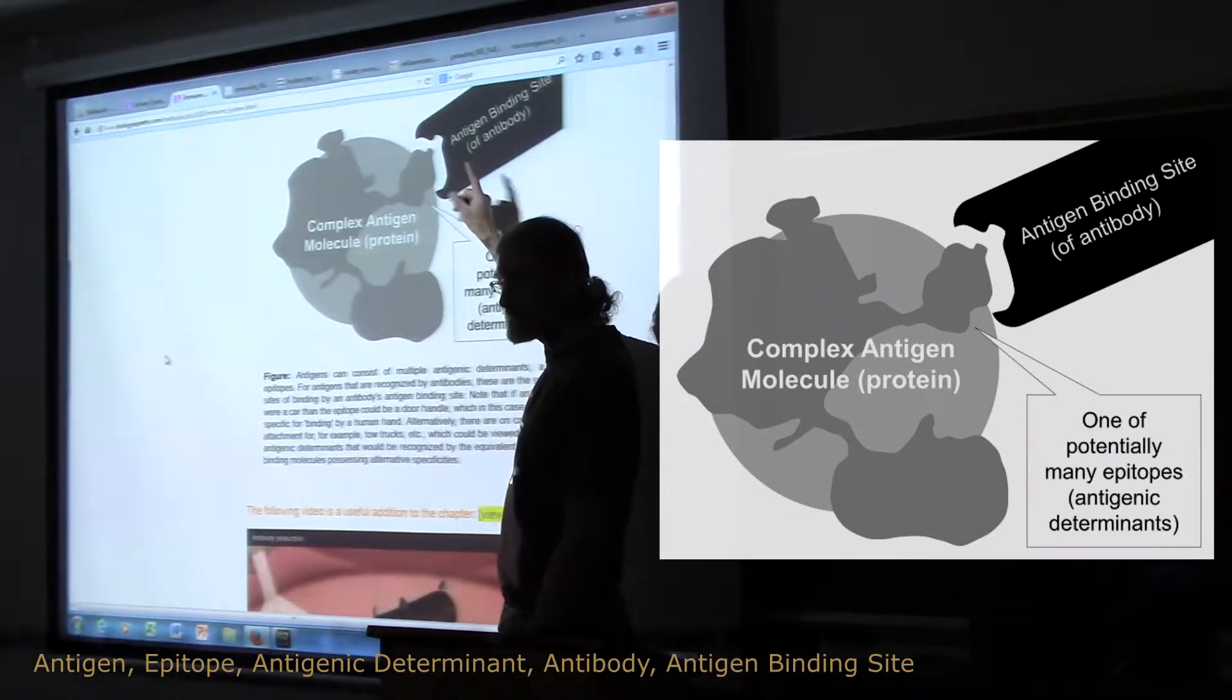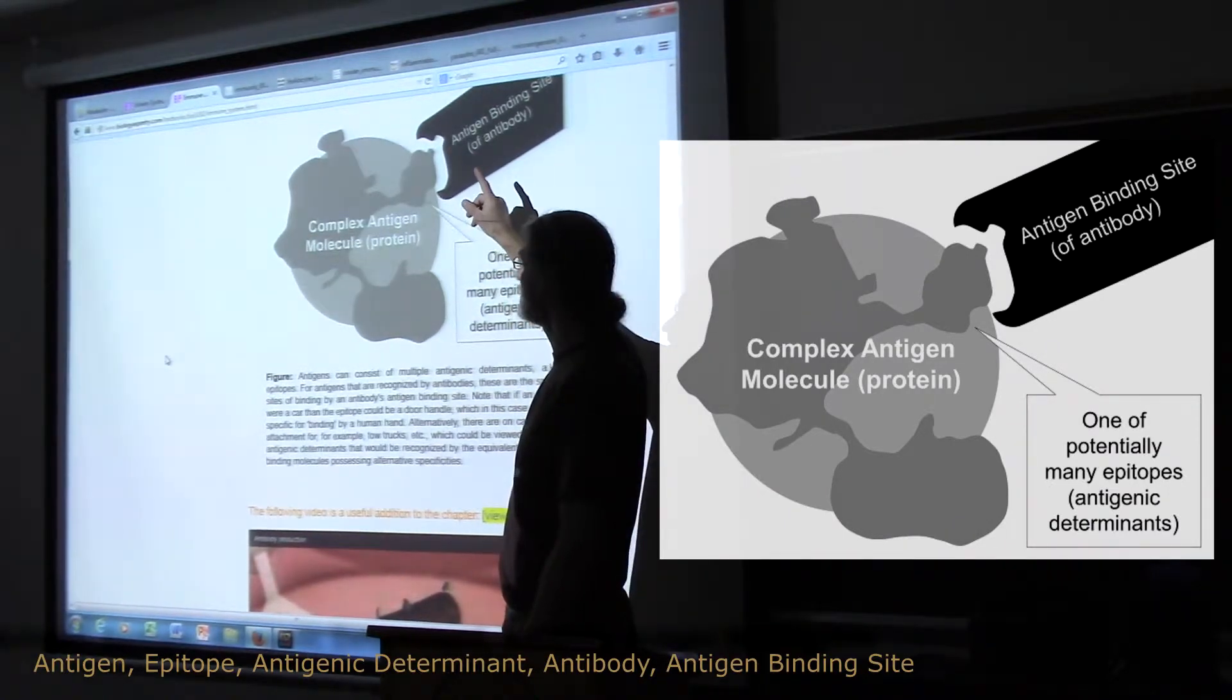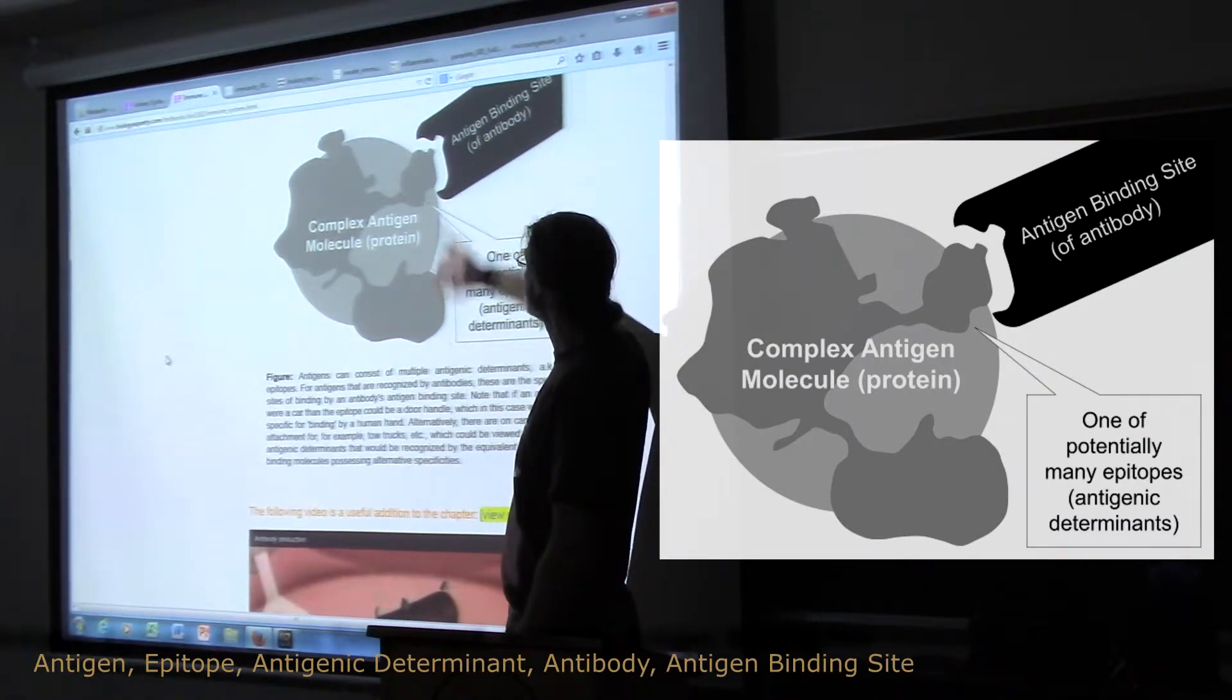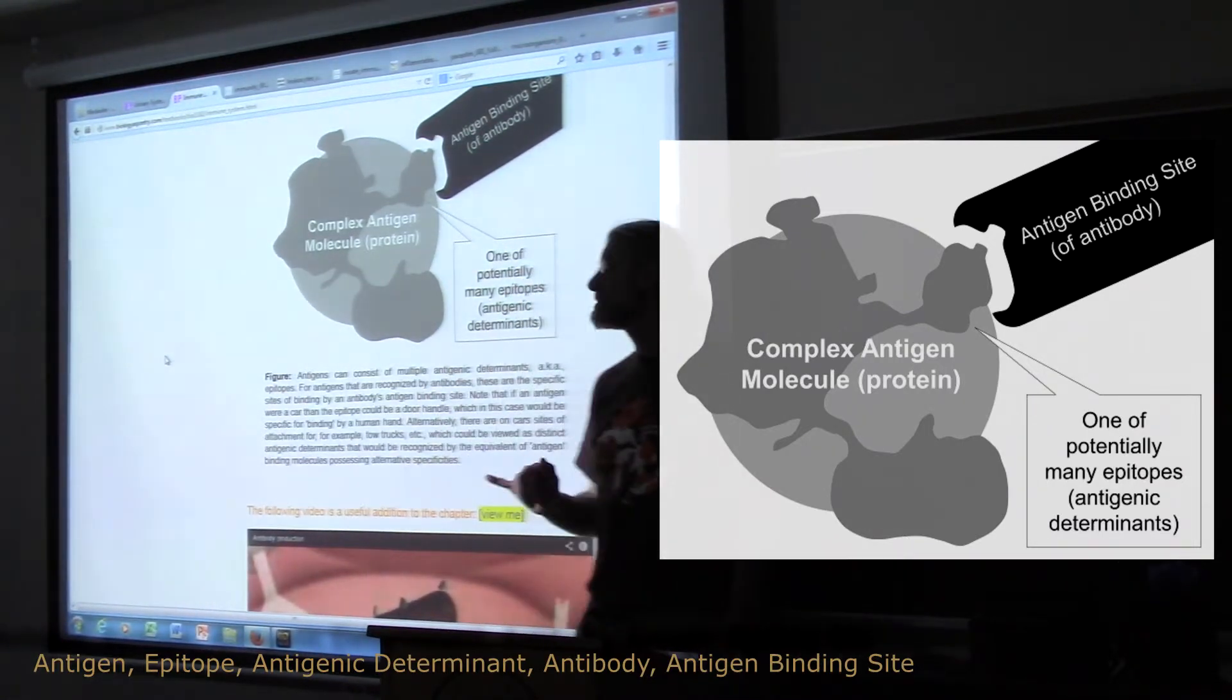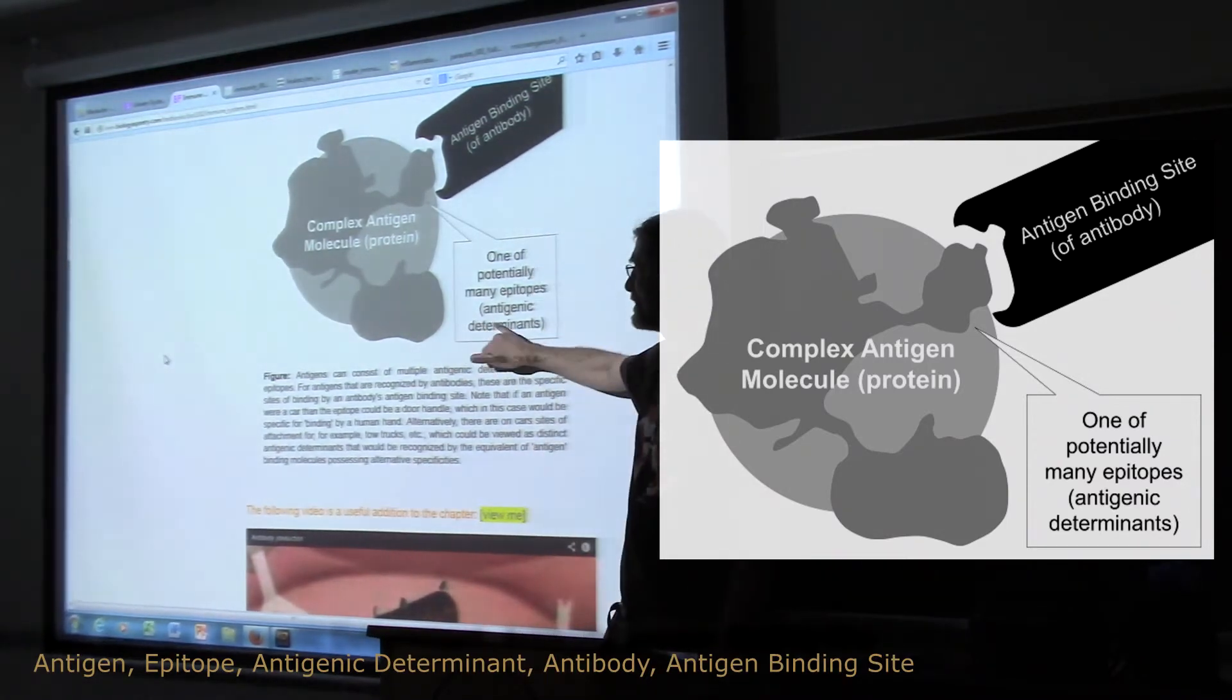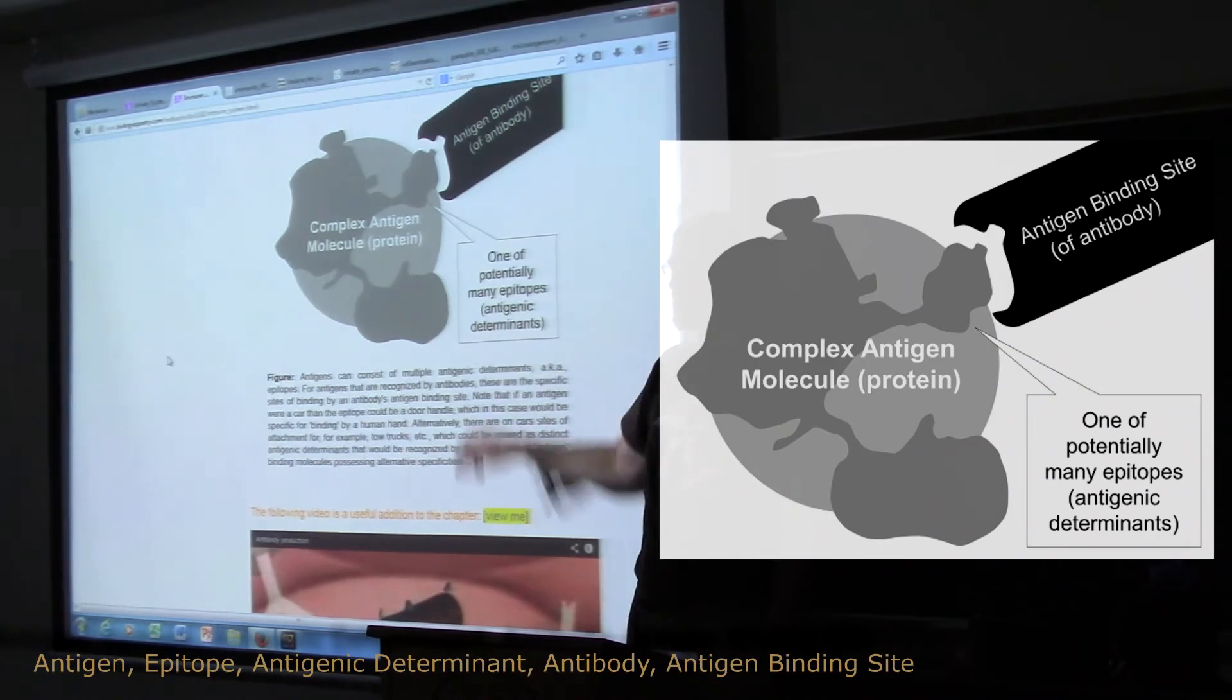The thing that binds to that foreign substance is an antibody. The specific site of binding is the antigen binding site, and what is bound to is an epitope, or antigenic determinant.